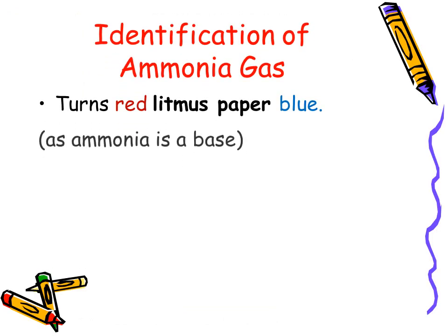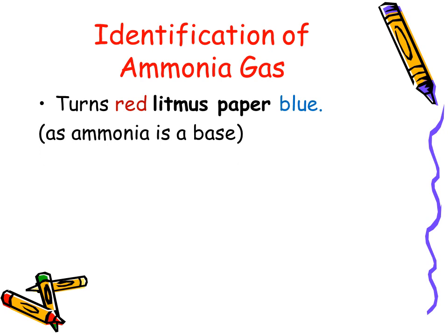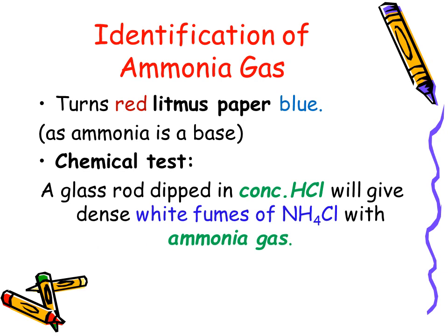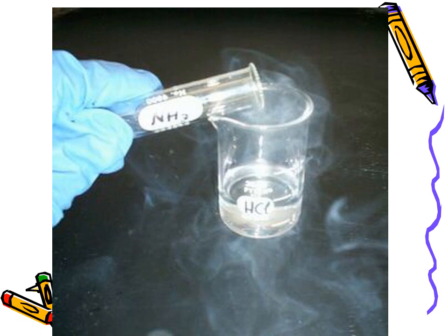Ammonia gas can easily be identified by a litmus test due to its basic nature — it turns red litmus paper blue. It can also be identified using chemicals: a glass rod dipped in concentrated HCl will give dense white fumes of ammonium chloride with ammonia gas. These fumes are clearly visible in this picture.